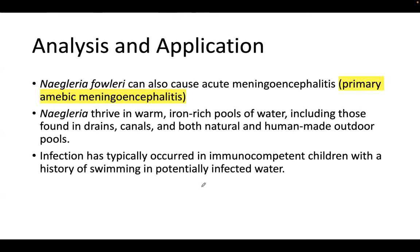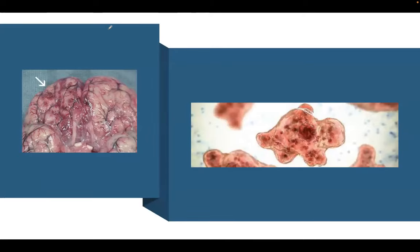Here is your rationalization — a classic analysis and application question following higher orders of learning by Bloom's taxonomy. Naegleria fowleri causes primary amoebic meningoencephalitis associated with warm, iron-rich pools of water. It specifically hits the entorhinal and frontal cortex because it enters through the nose and the cribriform plate.